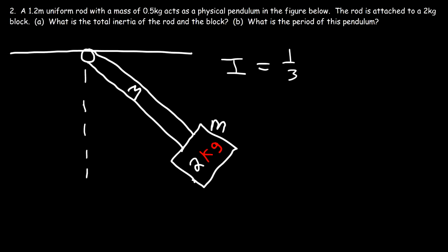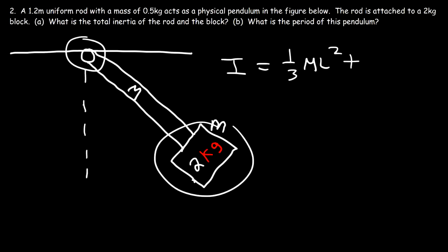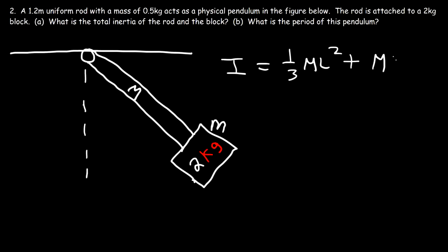The inertia of the rod with the axis of rotation at the end is 1/3 · M · L². The inertia of the block relative to the axis of rotation — we can treat that as a point mass — so it's just mR², which is the same as mL². All we have to do now is plug in the values.